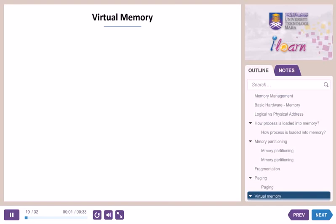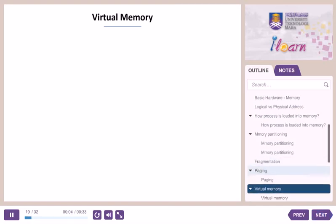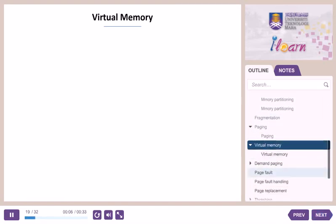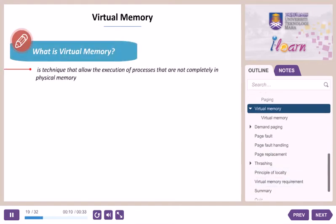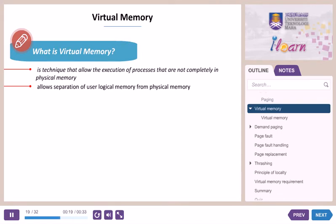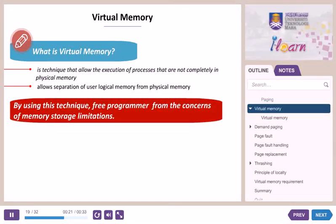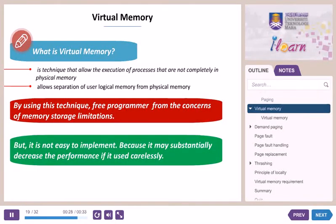Virtual memory. The most common part of modern operating system implementation is virtual memory. It is a technique that allows the execution of processes that are not completely in physical memory, and allows separation of user logical memory from physical memory. Using this technique frees the programmer from concerns of memory storage limitations. However, it is not easy to implement because it may substantially decrease performance if used carelessly.